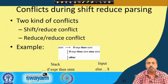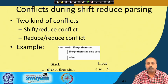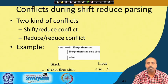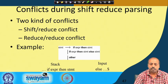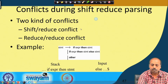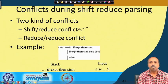Many a time we will see that there will be conflict because, depending upon the grammar, the parser may not be able to decide uniquely whether to do a shift operation or a reduce operation. That is known as a shift-reduce conflict — the parser cannot decide whether to shift or to reduce.